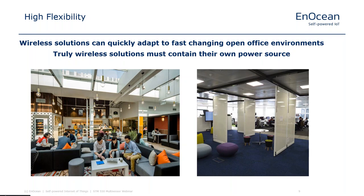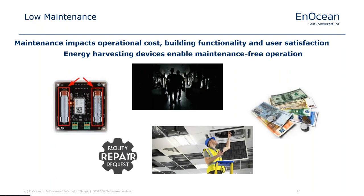At the moment you remove wiring to get a truly wireless solution, you must have an integrated power source to make your sensor operational. If you have a wireless solution, you need one that also gives you low maintenance, because maintenance directly impacts operational cost and building functionality. Having energy harvesting devices enables maintenance-free operation. This is one of the key technologies EnOcean believes in — the combination of energy harvesting with wireless sensor functionality to provide data for smart buildings.